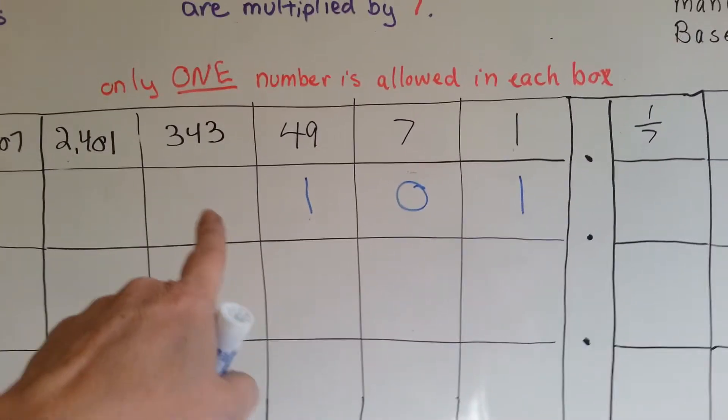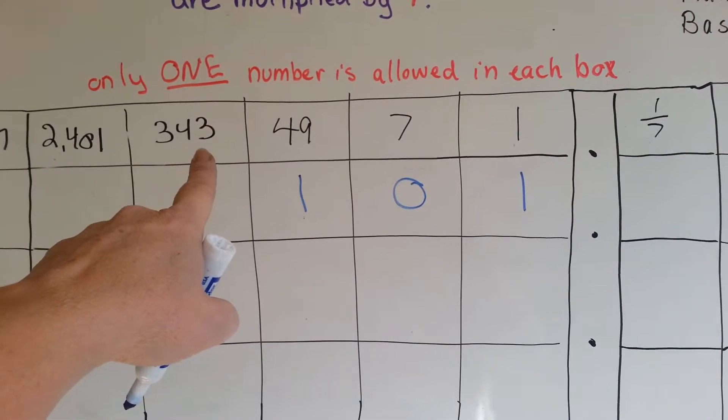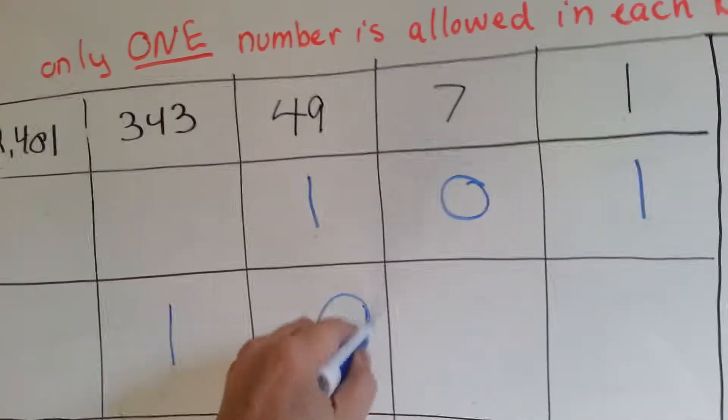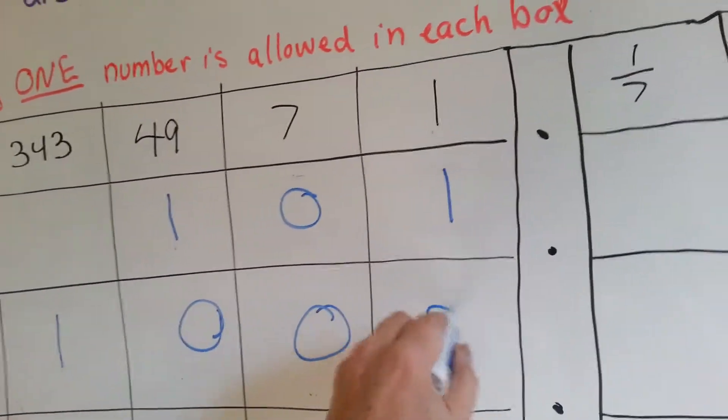If you wanted to say three hundred and forty-five, two more than this, we'd have one of these, no forty-nines, no sevens, but we would have two ones.